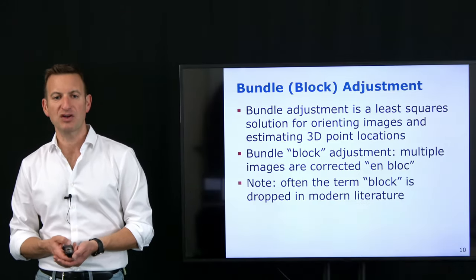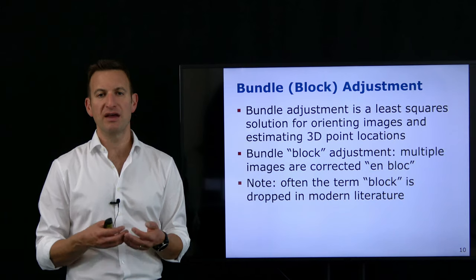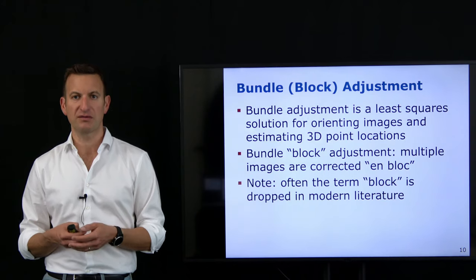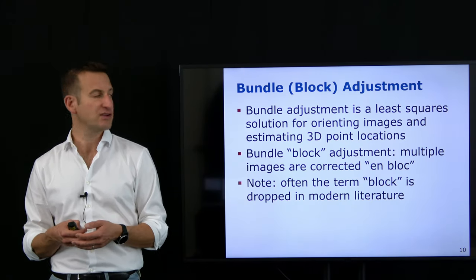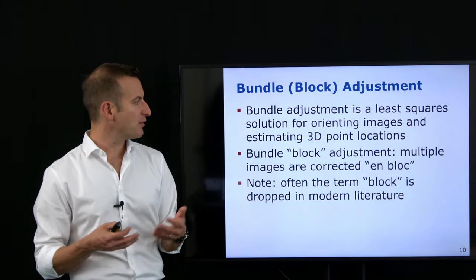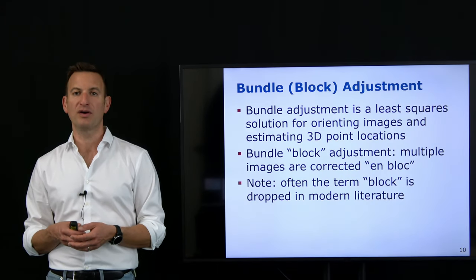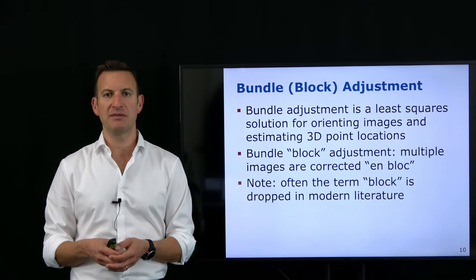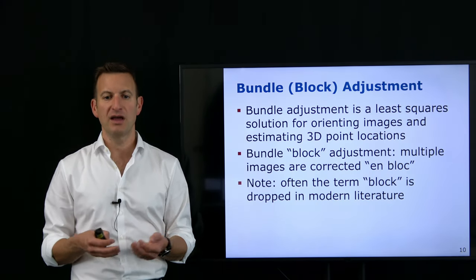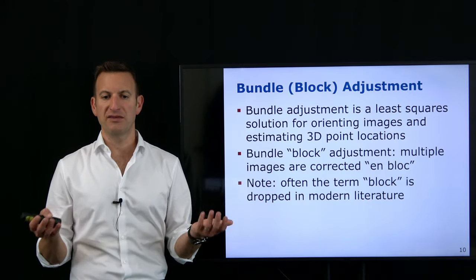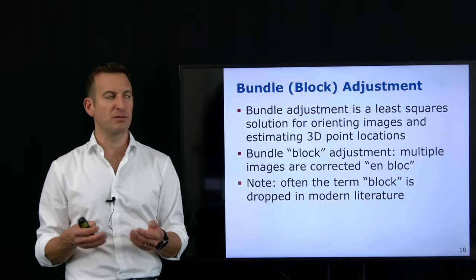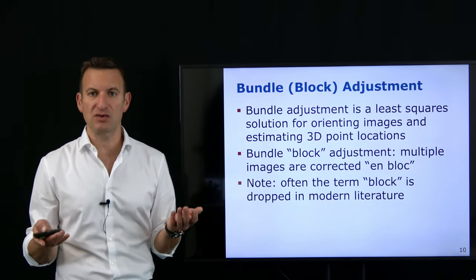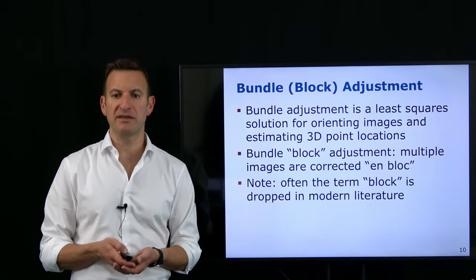Bundle adjustment — originally called bundle block adjustment — is the technique of estimating the orientation of my camera, which is a 6 degrees-of-freedom parameter for every camera, and the 3D locations of points in the environment. I'm doing this on a block, taking a larger set of images into account simultaneously. Today the term 'block' is typically dropped in modern literature, so we just call this bundle adjustment.